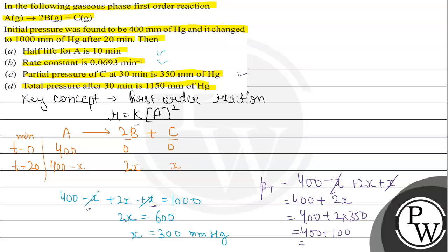So 400 plus 2 multiplied by 350, 400 plus 700, it will be 1100 mm Hg. And this pressure is close to 1150, so that's why our statement is also correct. The difference of 50 mm Hg pressure makes it equivalent.